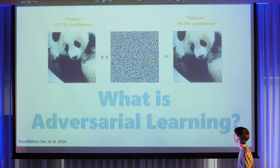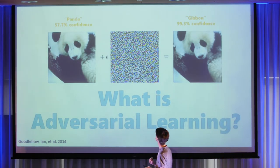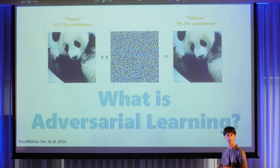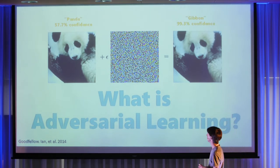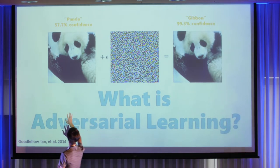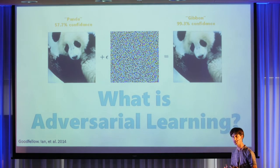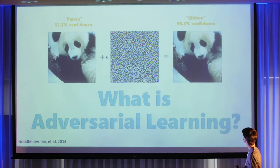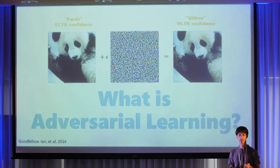If you saw this picture before, you know something about adversarial learning. The trick is: you take a panda, mix it with some noise which looks random but isn't, and you get another panda that looks the same. But this panda was perfectly classified by a neural network, while the other is classified as a gibbon with 99.3% certainty. I personally can hardly tell the two pandas apart. That's adversarial learning in a nutshell.